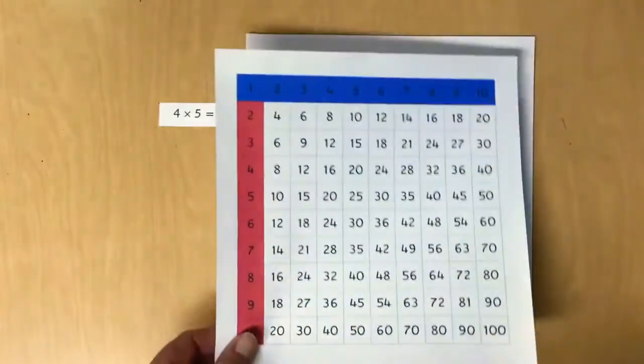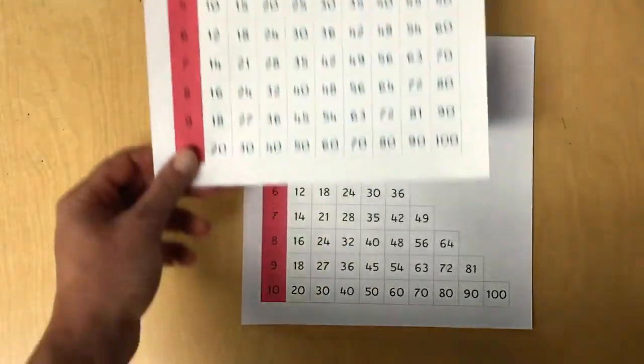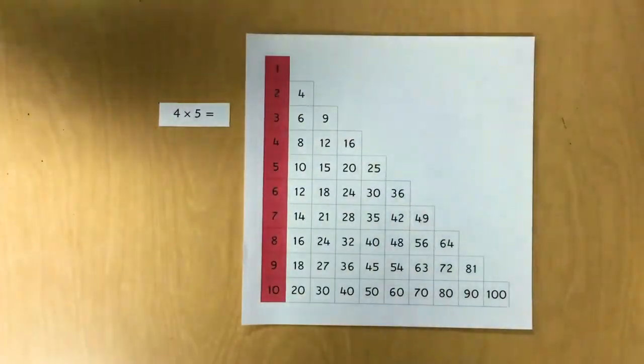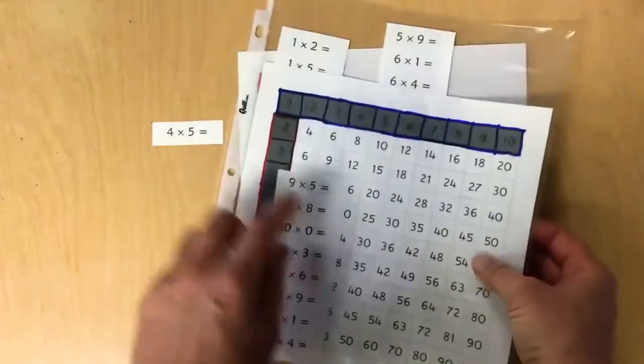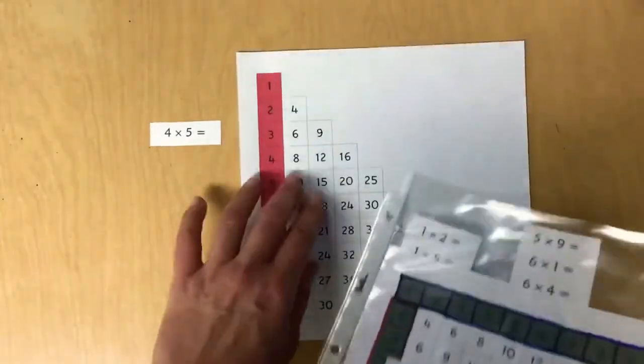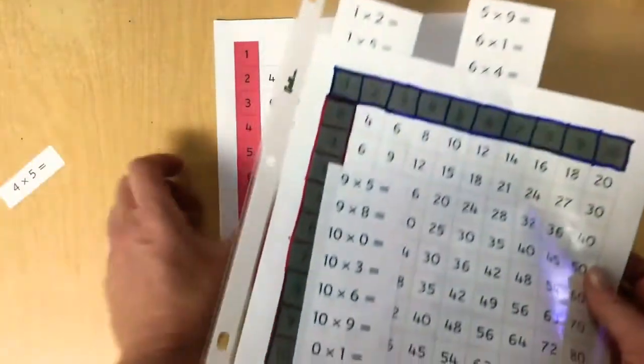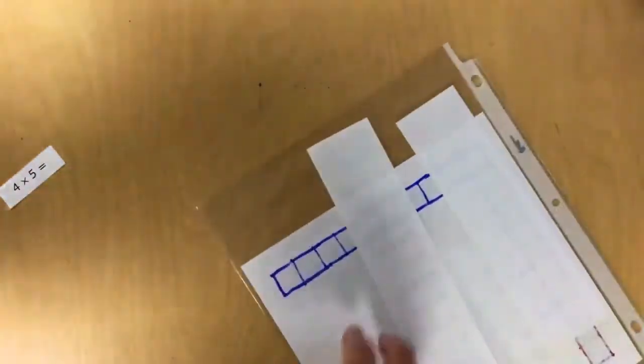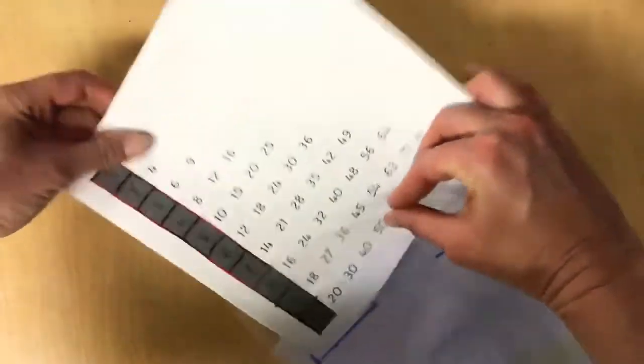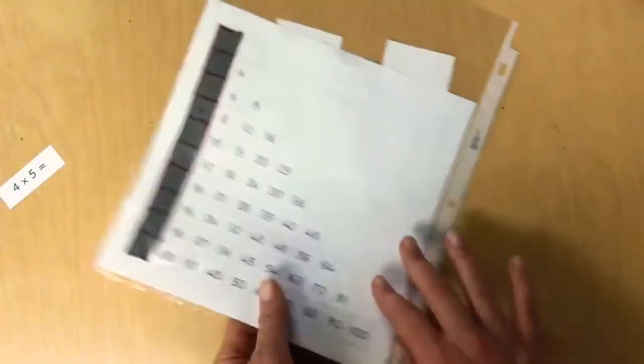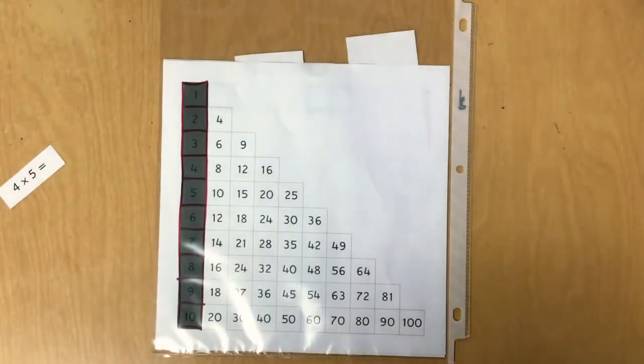This half chart is a little different than the full chart. There's a few more steps, but you can use either chart. In your plastic sleeve you have these equations and you can practice finding the answers on the half chart. When you're done, these charts should all go back in the plastic. I recommend keeping these in your binder. All right friends, that's how to use your half multiplication chart. See you next time!